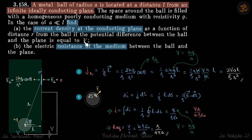We have a voltage V across the ball and the plane. The ball is at higher potential, so it accumulates some charge plus Q. There will be some charge minus Q on the plane but we don't need to bother about that for now. Since it's a conducting plane, the electric field is perpendicular to the surface, and we can relate it to current density using the direct formula J = σE, or equivalently E/rho.